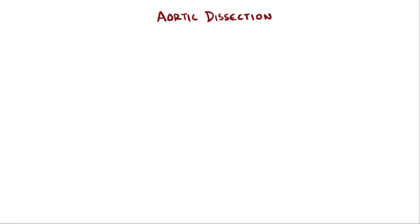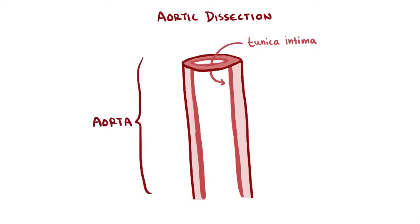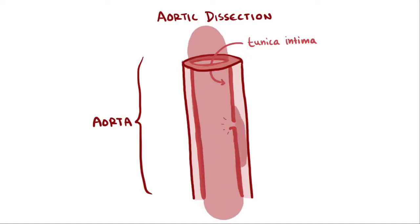An aortic dissection is where part of the tunica intima, which is the endothelial or the innermost layer of a blood vessel of the aorta, is ripped off. A tear in the tunica intima of the aorta forms, and the high-pressured blood flowing through the aorta begins to tunnel between the tunica intima and the tunica media, separating the two layers.